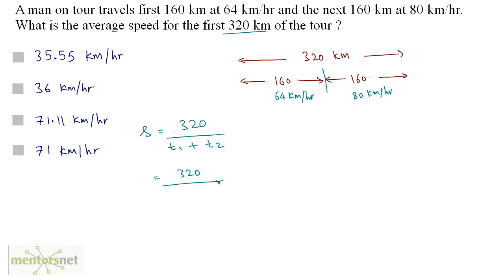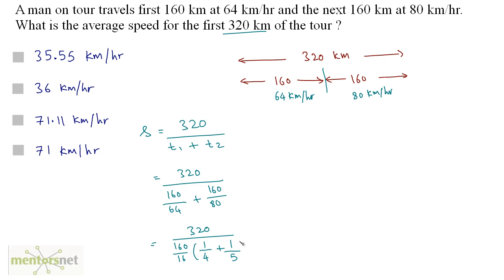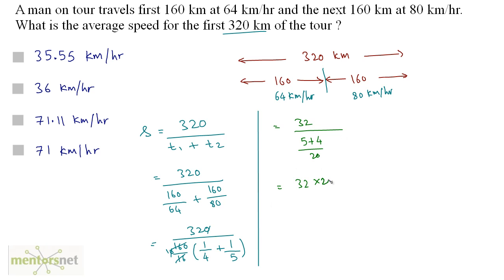Using time equals distance upon speed: t1 is 160 by 64 and t2 is 160 by 80. So average speed equals 320 divided by (160/64 + 160/80). Taking 160/16 as a common factor, this simplifies to 320 divided by (160/16) times (1/4 + 1/5). That gives 32 times 20 by 9, which equals 640 by 9.